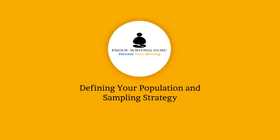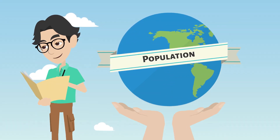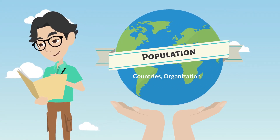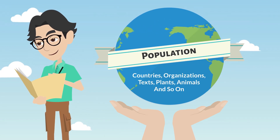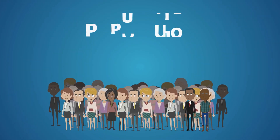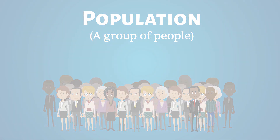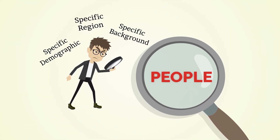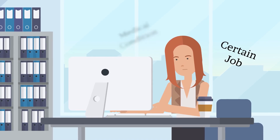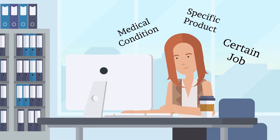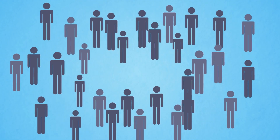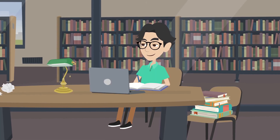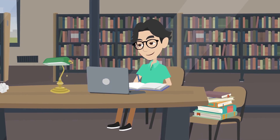When you are conducting research, a population can be made up of anything you want to study — countries, organizations, texts, plants, animals, and so on. However, in social sciences, population most often refers to a group of people. Will you focus on people from a specific demographic, a specific region, or a specific background? Are you interested in people with a certain job or medical condition, or people who use a specific product? All the people that possess the characteristics in which you are interested make up your population. Remember that the more precisely you define your population, the easier it will be to gather a representative sample.